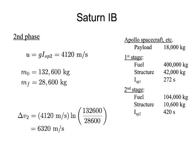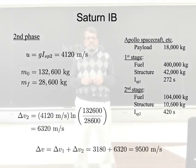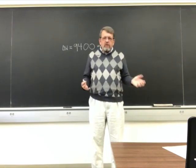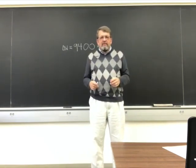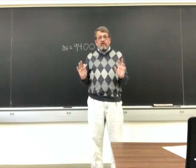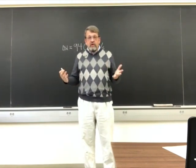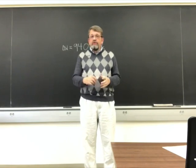The total delta-V for the Saturn 1B system is delta-V1 plus delta-V2: 3,180 + 6,320 = 9,500 meters per second. That's bigger than the required 9,400 meters per second. This is comfortably enough to get the Apollo spacecraft into Earth orbit, overcoming gravity, air resistance, and achieving orbital speed. The real example confirms that fuel mixture matters, sea level vs. vacuum specific impulse matters, but the math works out.